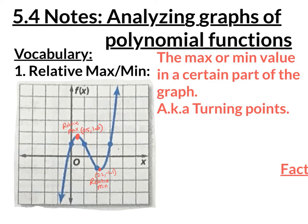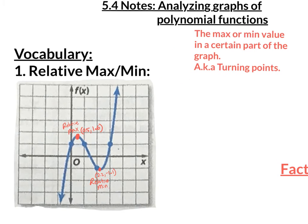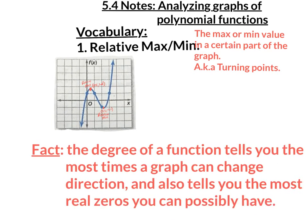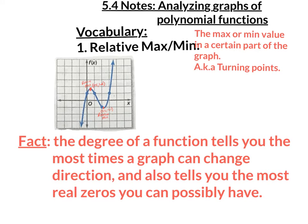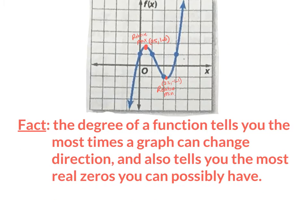So that's relative max and relative min. Now here's a fact to copy down in your notebooks: the degree of a function tells you the most times a graph can change direction — the most directions it will actually go in. It also tells you the most real zeros, the most answers you could possibly have.